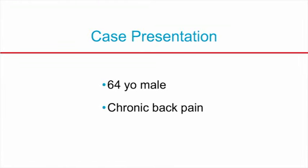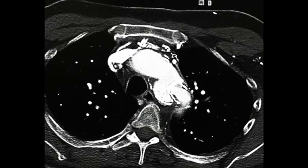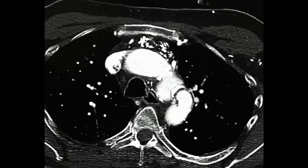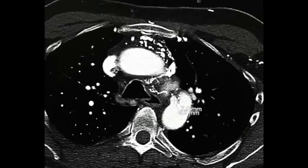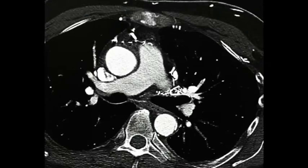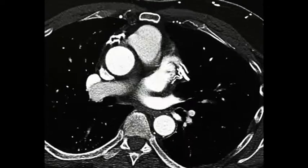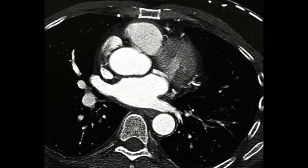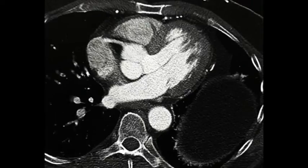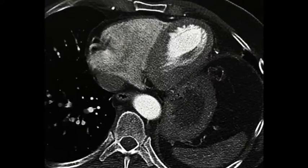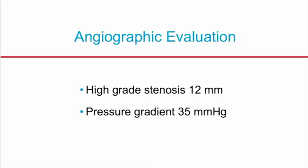This is a case of a 64-year-old male with a history of descending thoracic aortic repair. CT scan revealed a high-grade stenosis at the prior anastomosis with a graft diameter of 12 mm and a high pressure gradient.